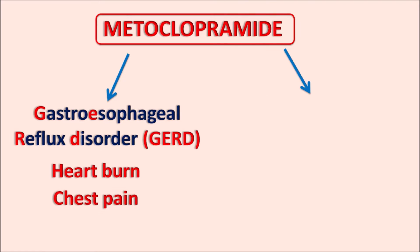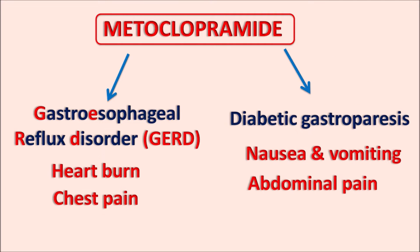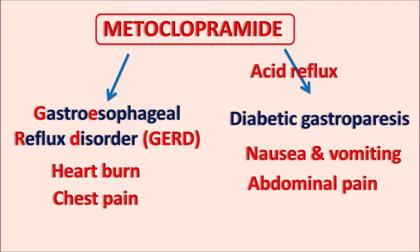Another indication of metoclopramide is the treatment of diabetic-induced gastroparesis. This is a similar condition where symptoms such as nausea, vomiting, abdominal pain, gastric irritation, and acid reflux can be observed. In such conditions, metoclopramide can be used as an antiemetic as well as a prokinetic agent.